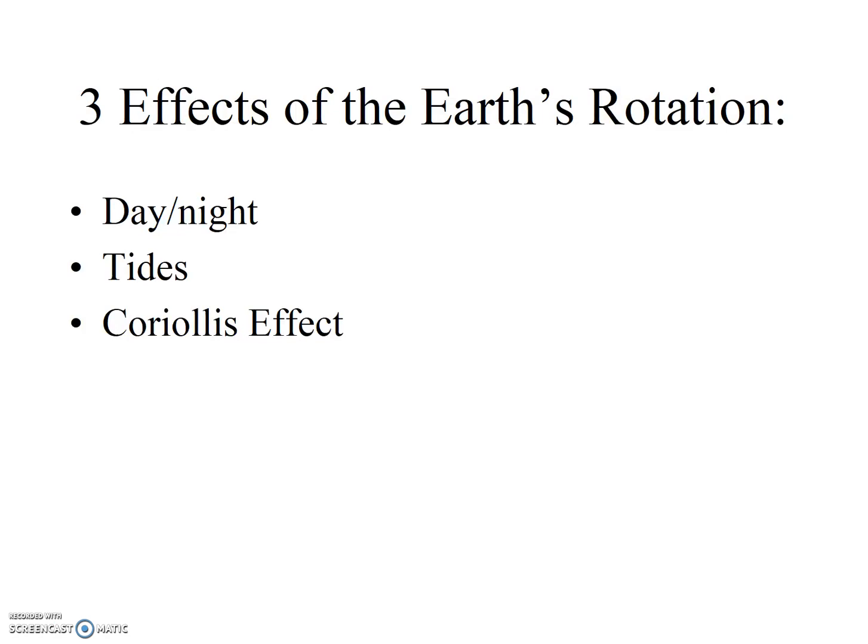First of all, the obvious one: the passage of day and night. As the Earth rotates, different parts of Earth rotate past the Sun. Basically, different parts of the Earth are within the circle of illumination. Notably, as noted earlier, at any given time, half of the Earth is within the circle of illumination. We'll talk about the related concepts of day length and the passage of time and time zones in subsequent videos.